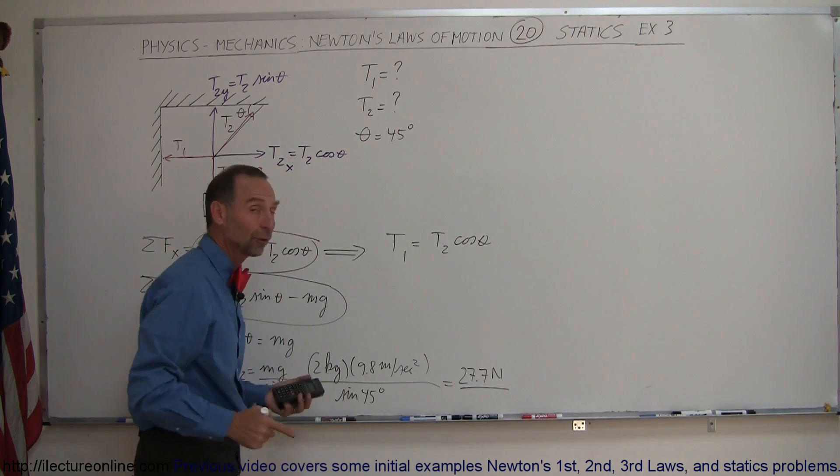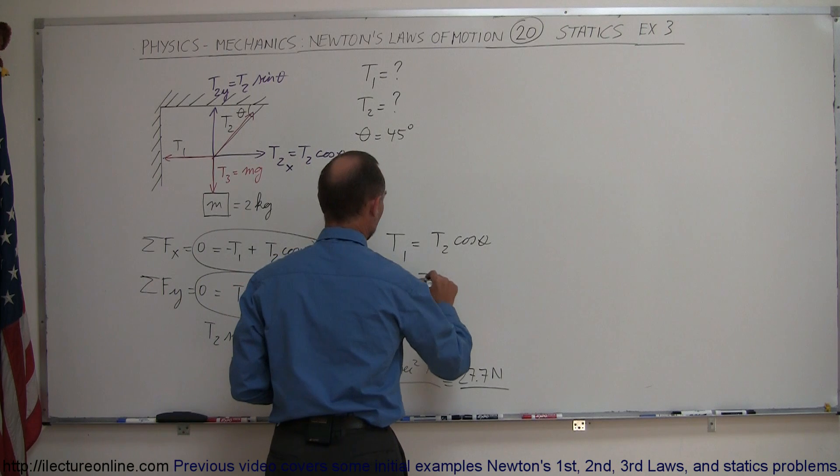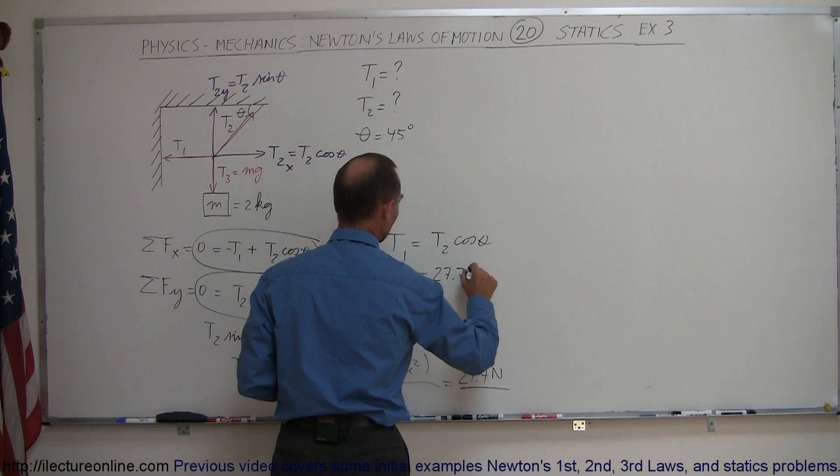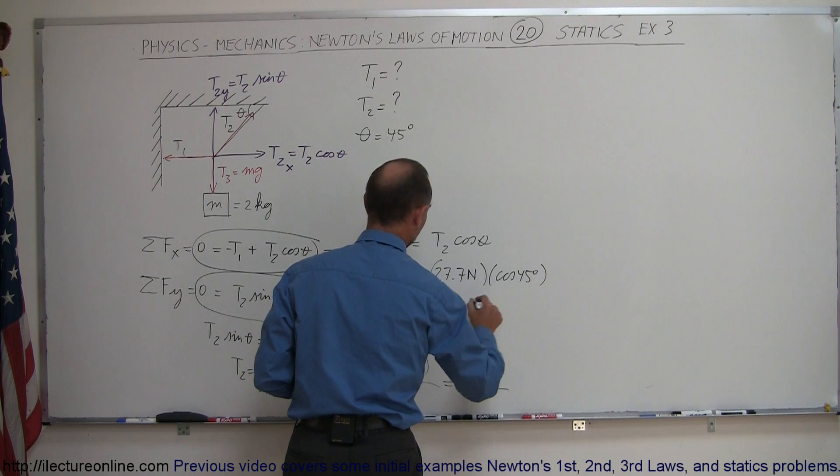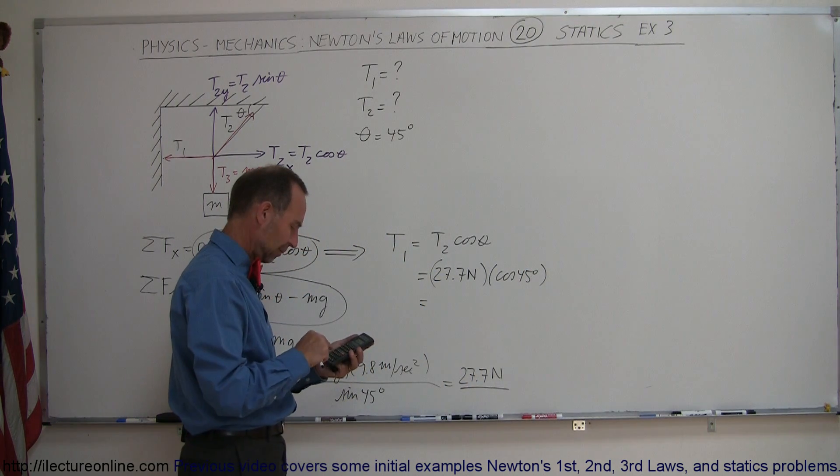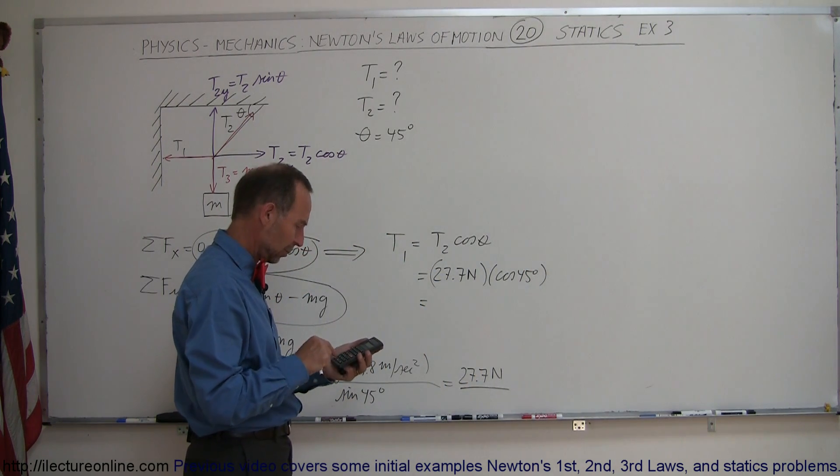We know that theta is 45 degrees. We found T2, so this is equal to 27.7 newtons, times the cosine of 45 degrees. So times 45 times the cosine equals,